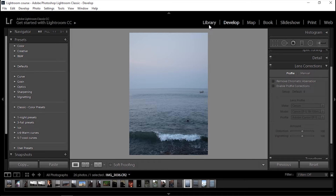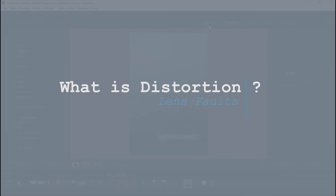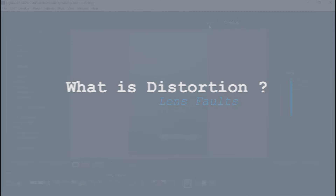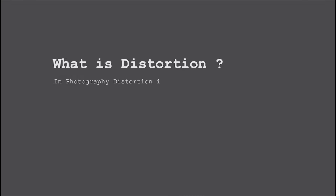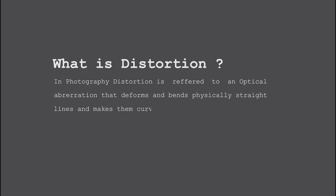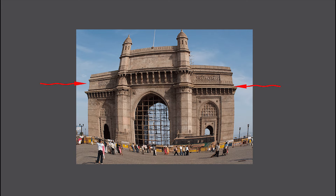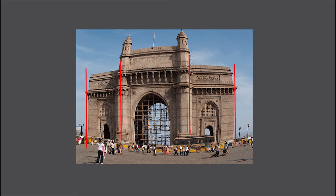The most common problem of lenses is called distortion. In photography, distortion refers to an optical aberration that deforms and bends physically straight lines and makes them look curvy, as shown in this example. We see that these lines are perfectly straight in real life, but in this photo they look bendy and curvy, causing the image to lose its purpose and look weird.